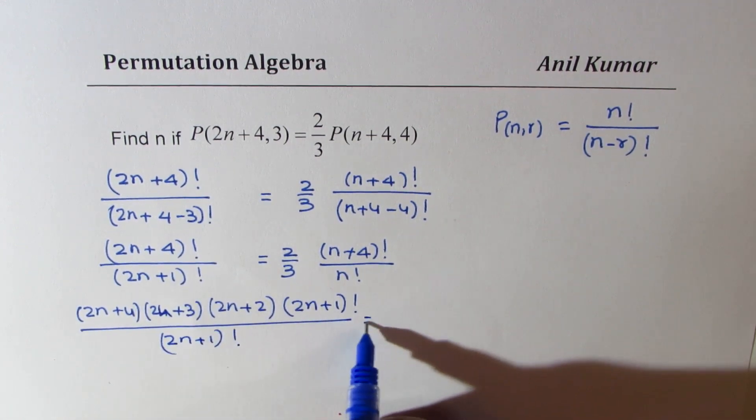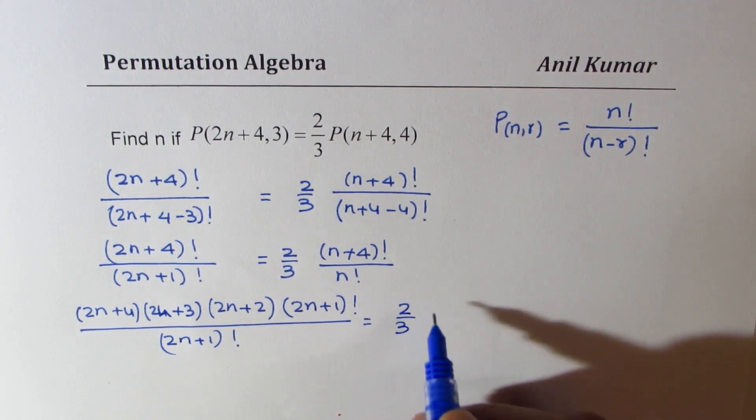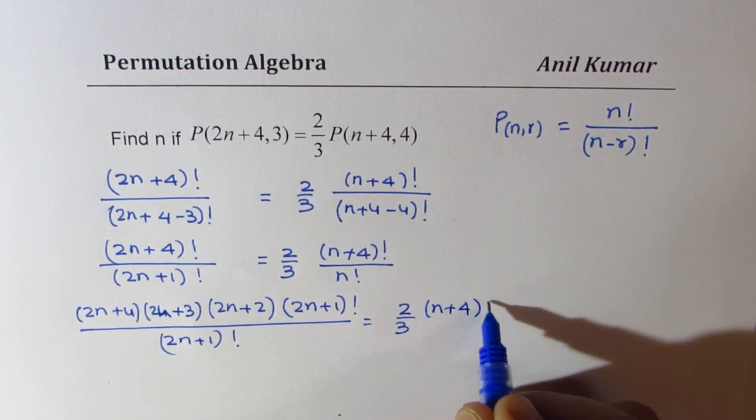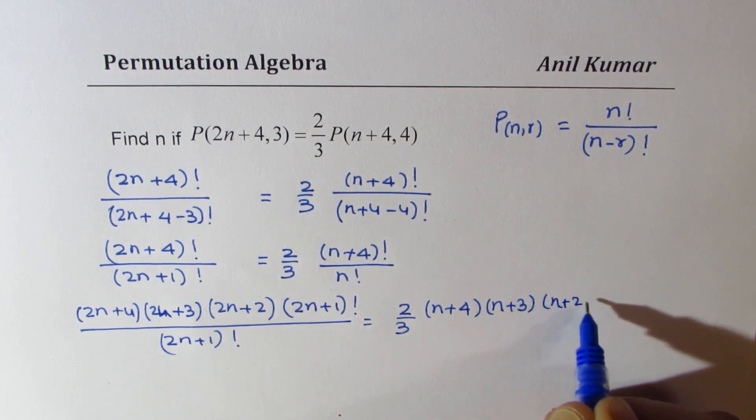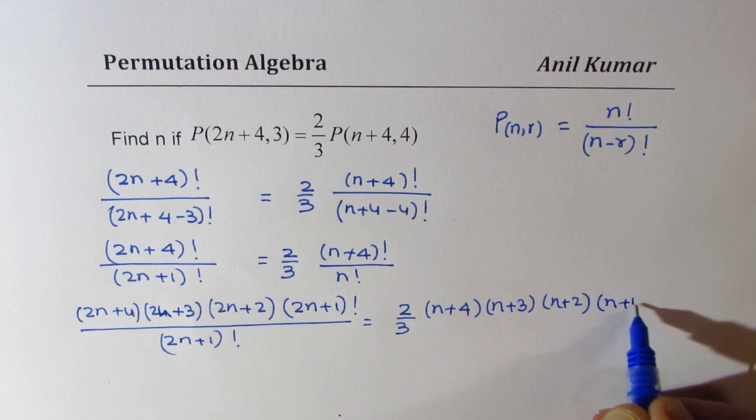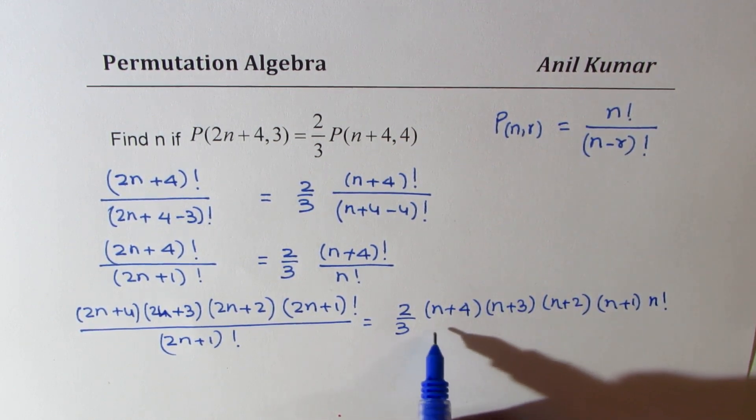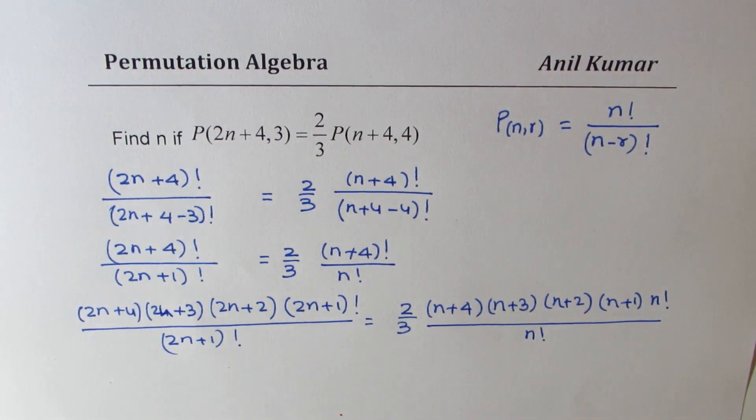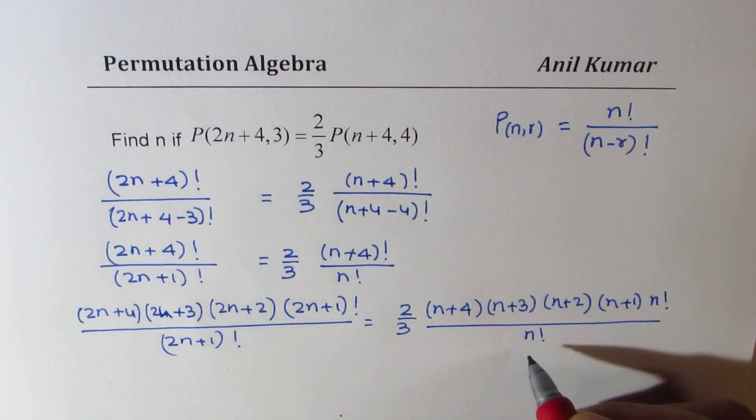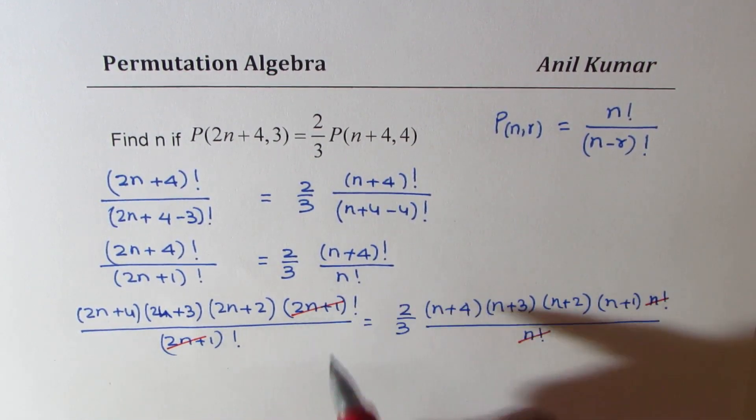On the right side, we get 2/3 times (n+4) times (n+3) times (n+2) times (n+1) times n factorial over n factorial. Now from here, n factorial cancels, and here we can cancel (2n+1) factorial.